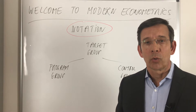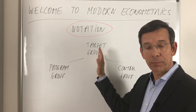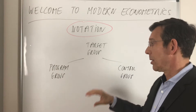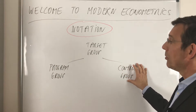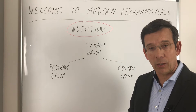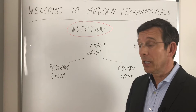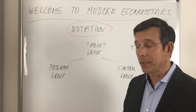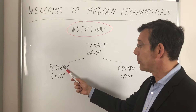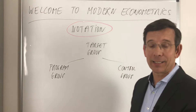We randomized a target group and assigned people from the target group to the program group or to the control group. This was completely randomly done by, for example, flipping a coin — that's the core of a randomized control trial. We want to find out what is the causal effect of a treatment for the program group in comparison to a control group which was denied access to the treatment.